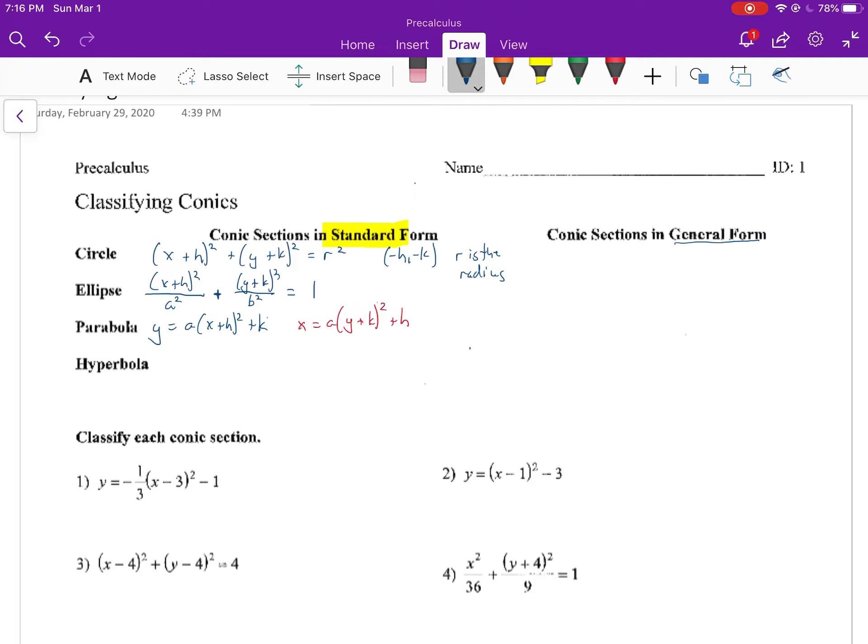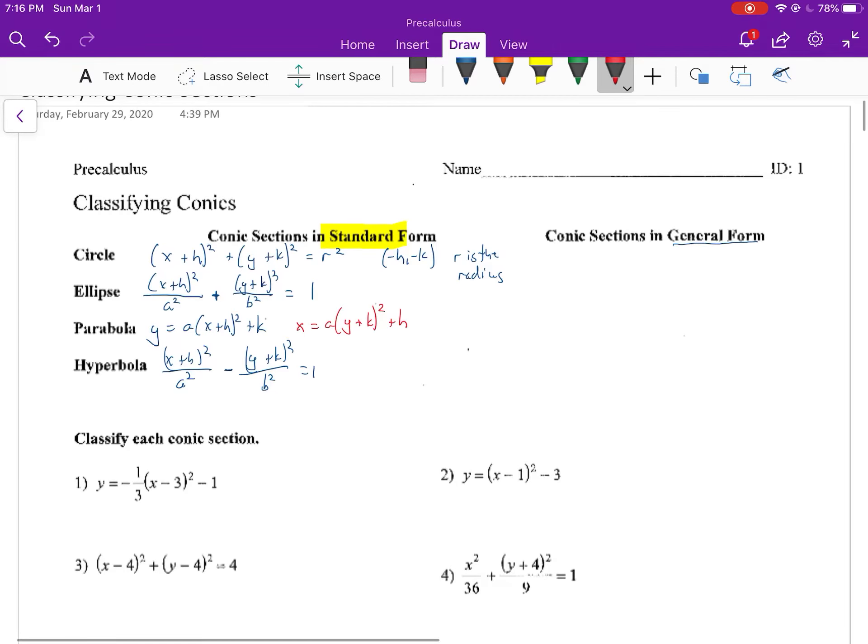Hyperbola, again, I said it was just like ellipse. x plus h squared over a squared minus y plus k squared over b squared equals 1. And while we're at it, I'll write this. x is not always first. Sometimes y is first, and it has to do with the negative sign that's there, so there's another form where we'd actually have y first. So y plus k squared over a squared minus x plus h squared over b squared equals 1.